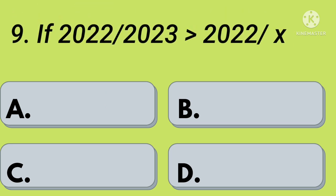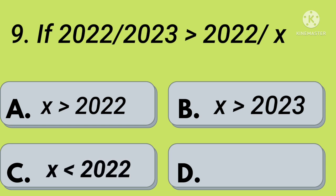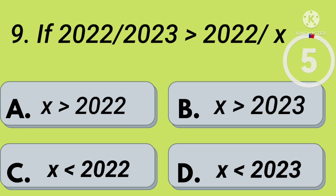Ninth question: if 2022 by 2023 is greater than 2022 by X — option A: X greater than 2022, option B: X greater than 2023, option C: X less than 2022, option D: X less than 2023. Your time starts now. Right, option A: X greater than 2022.